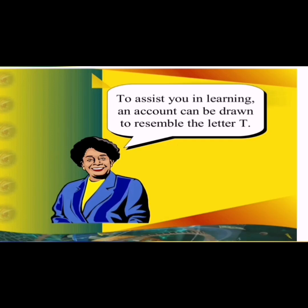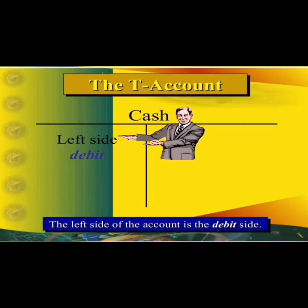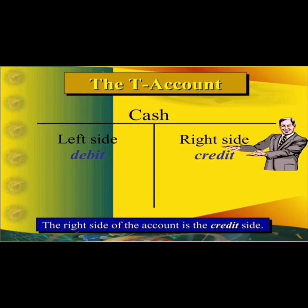To assist you in learning, an account can be shown to resemble the letter T — that is why it is called a T-account. Here is a sketch of a T-account. For your convenience, the first T-account is named the cash account. On the top there is the title of the account, which is 'cash.' The left side of that T-account is called the debit side, and the right side is called the credit side.